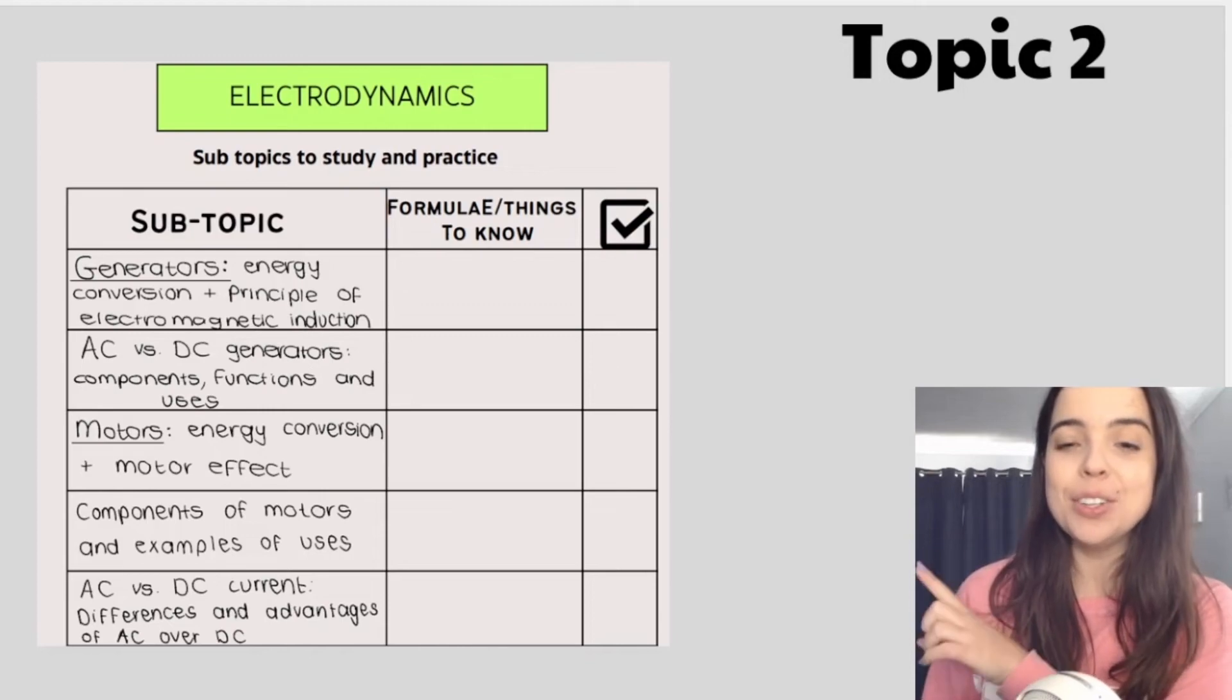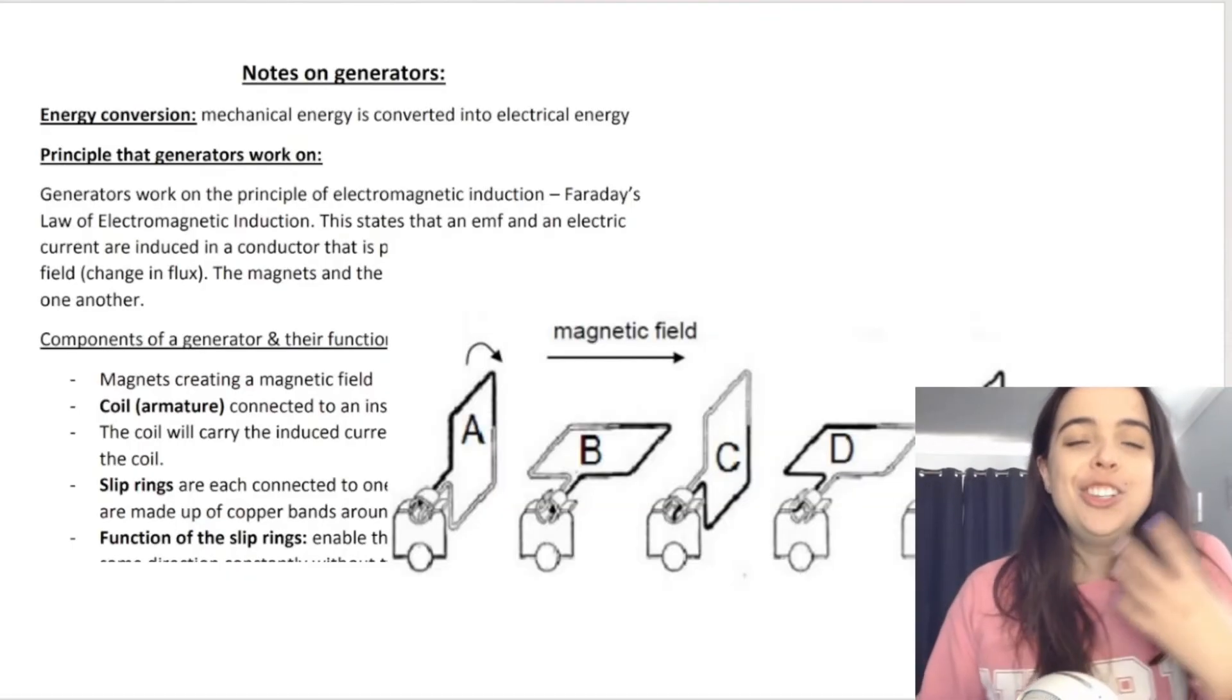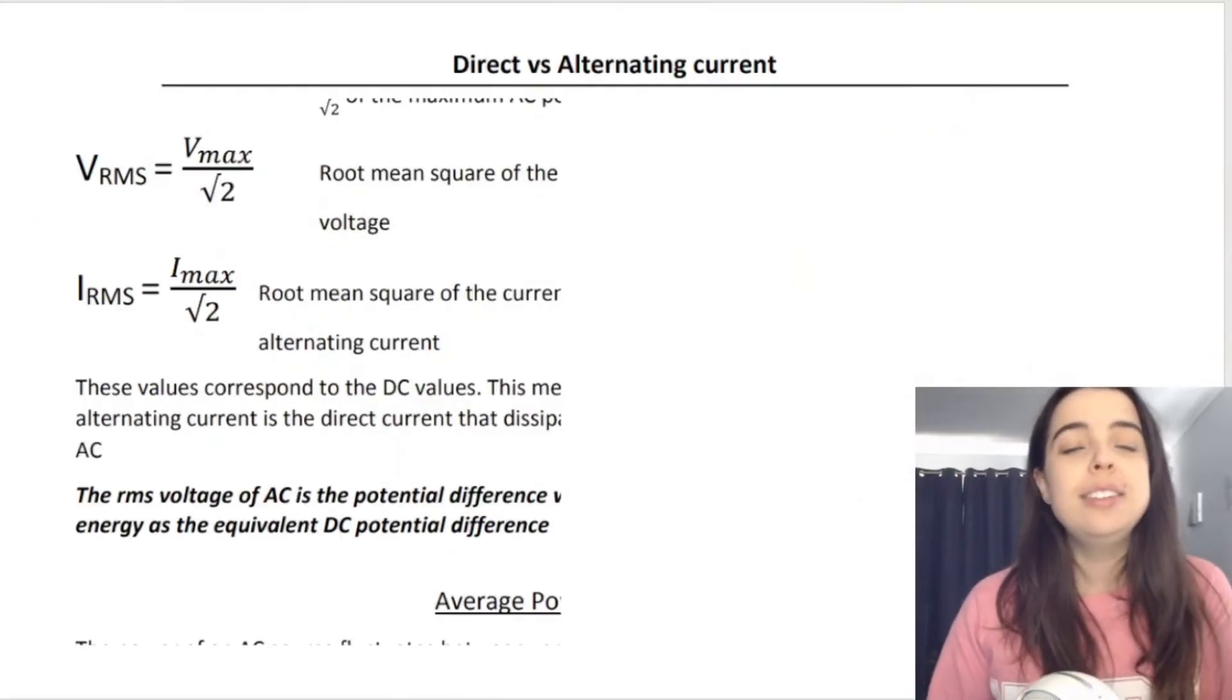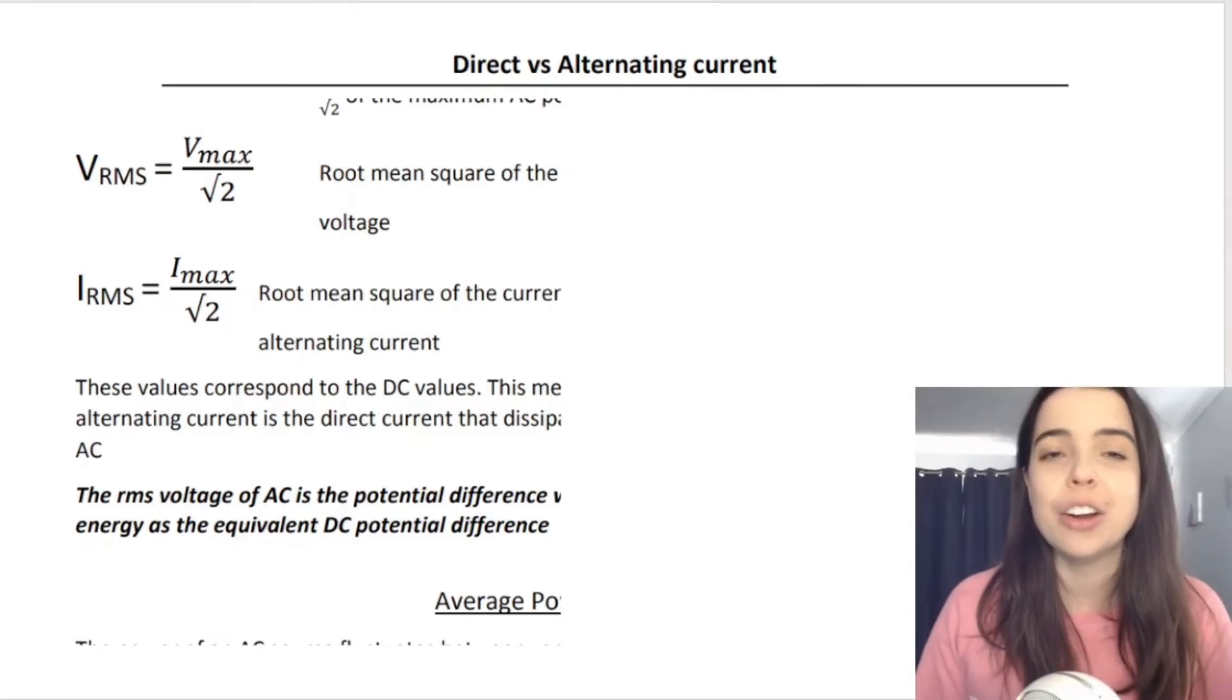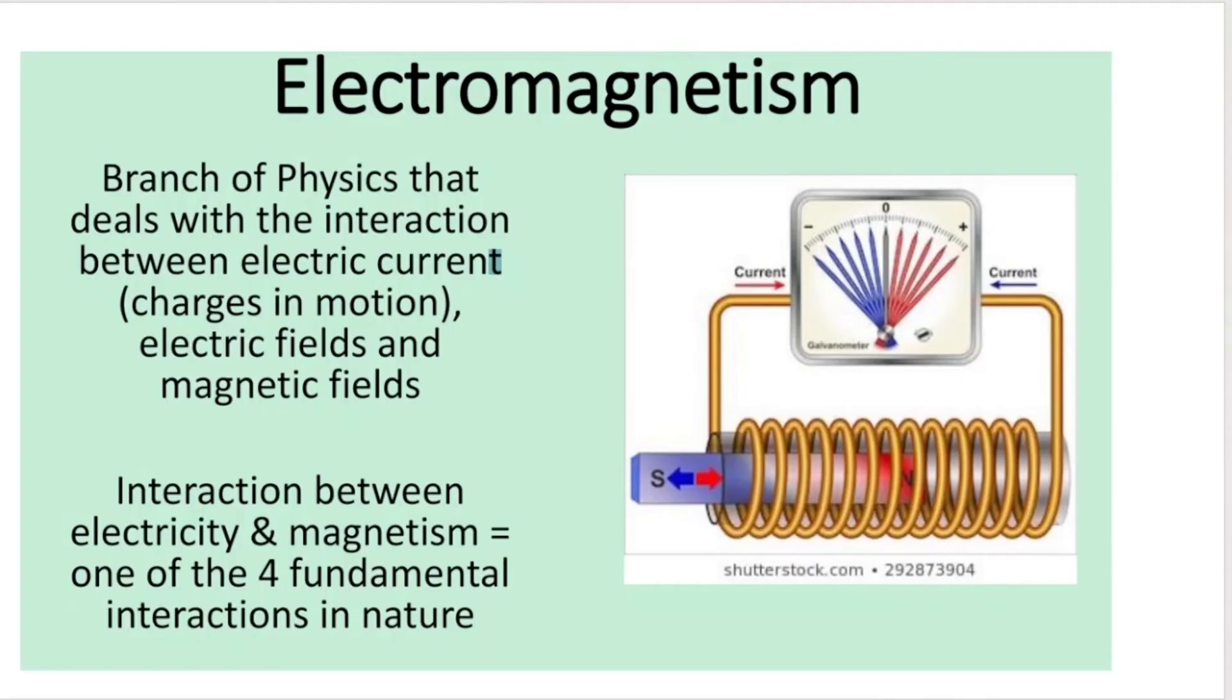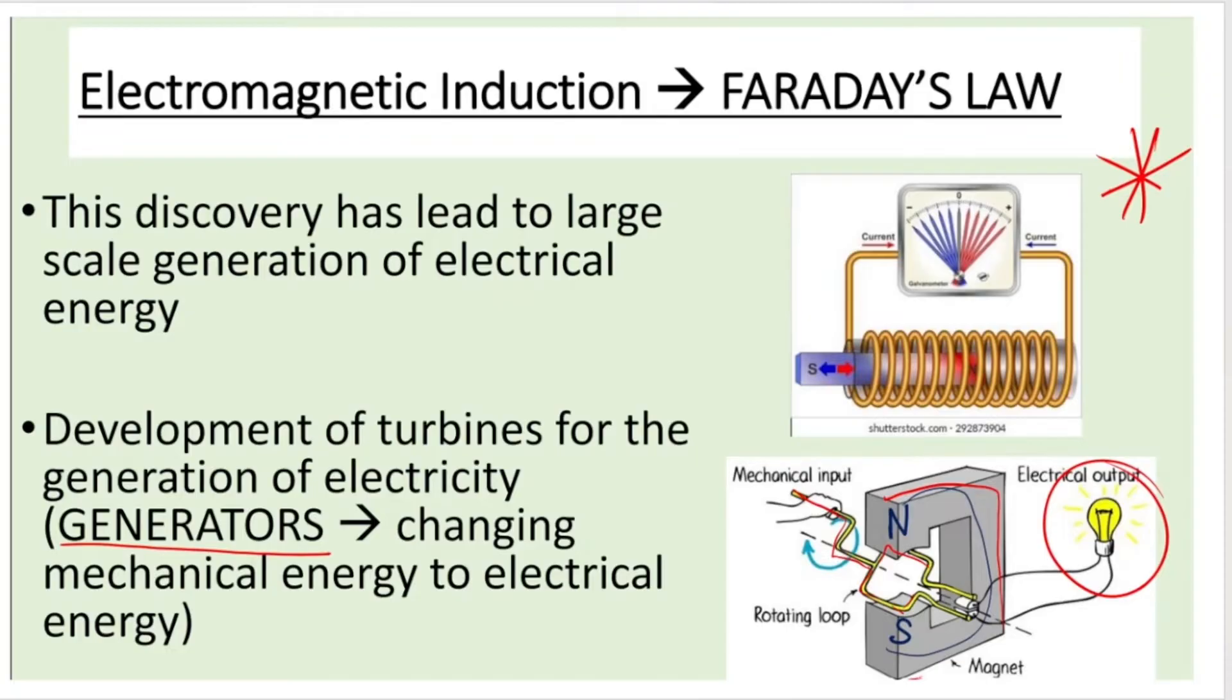Our second topic is known as electrodynamics. We go over generators, we go over motors, we go over direct versus alternating current, AC versus DC current. How can you prepare for this topic? Well, I would suggest going over the topic electromagnetism from grade 11. And that includes going over concepts such as electromagnetic induction, go over Faraday's law, things like that.